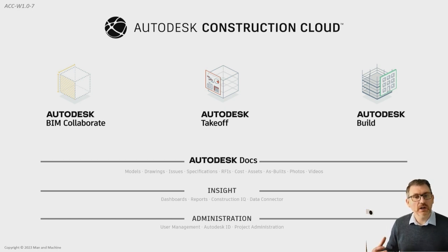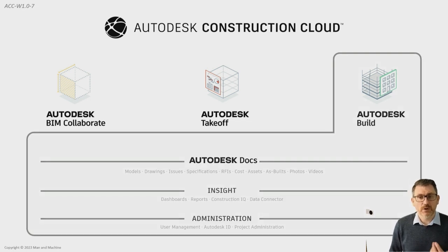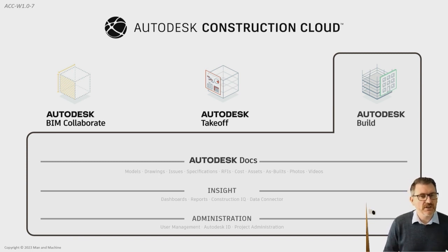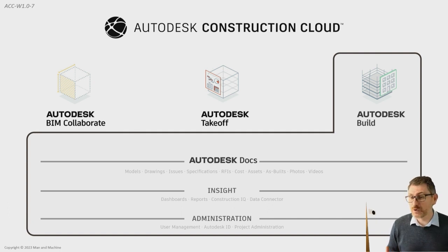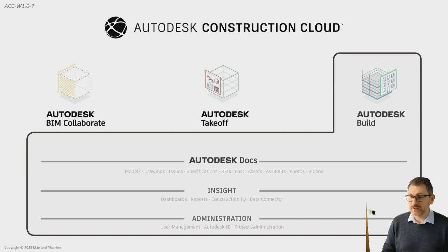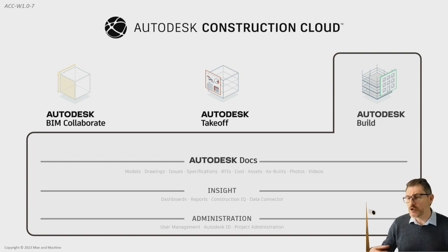Today we're focusing on Autodesk Build. One thing to note: when you purchase Build, you get access to Autodesk Docs licences as well. The same applies to Takeoff and BIM Collaborate. If you have an AEC Collection, you already have access to Autodesk Docs. So if you're working on a Revit model or a CAD file, you can instantly set up Autodesk Docs to save your information there — making it easy to access from the office, from home, or on site — and share it with all relevant parties.